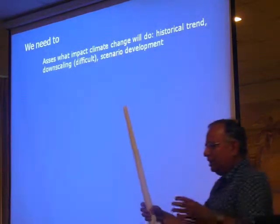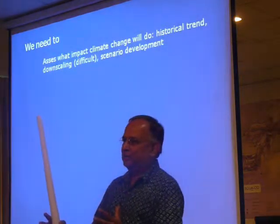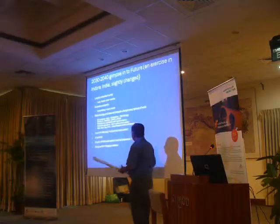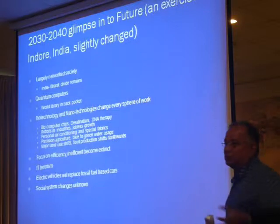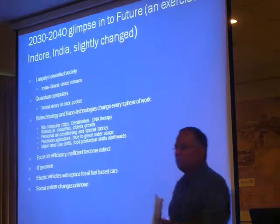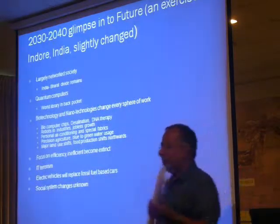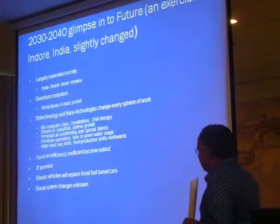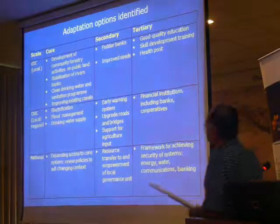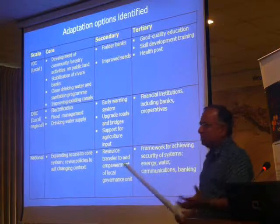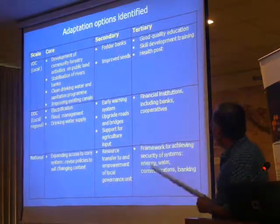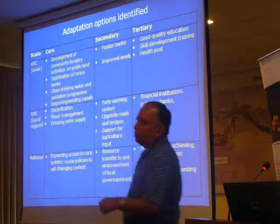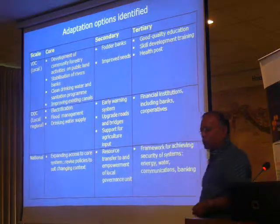From a climate change perspective, the VDC is a very small area, and it is very hard to say what the impact will be from global circulation models. So it changes every sphere of water — this is an agriculture system, blue water to green water. There is a land use change, food production shifts. Focus on efficiency becomes extreme. Some adaptation options mentioned include: developing community policy, early warning systems, upgrading roads, financing issues, and more provision of support. People want loans — they don't want to go to the local money lender at 120% interest. So more focus and support on cooperatives.